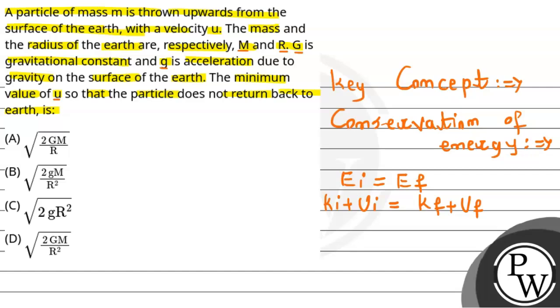Since the particle should not return back after throwing upward with escape velocity, at a very large distance, definitely the final potential energy is going to be zero. And for the particle to just escape the gravity, its final velocity will also be zero. Because we don't want it to return back to the earth, its final velocity will be zero, which leads to the final kinetic energy becoming equals to zero.